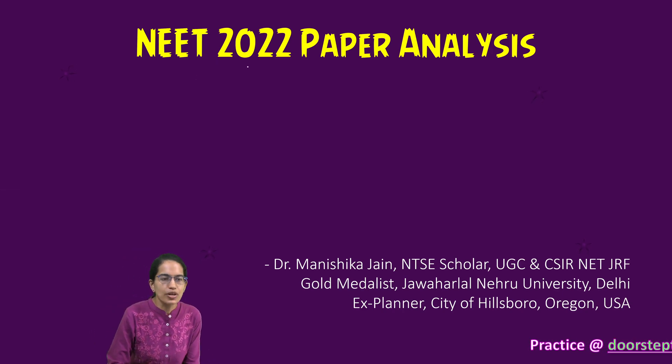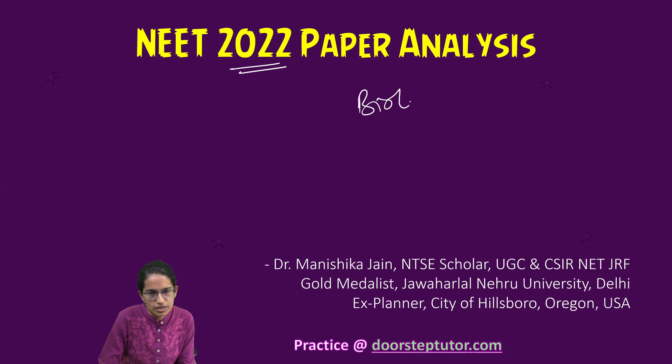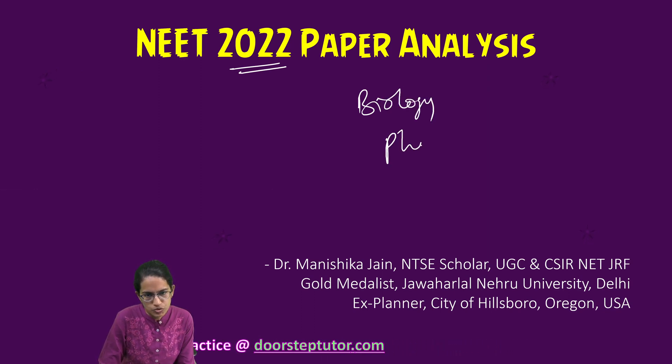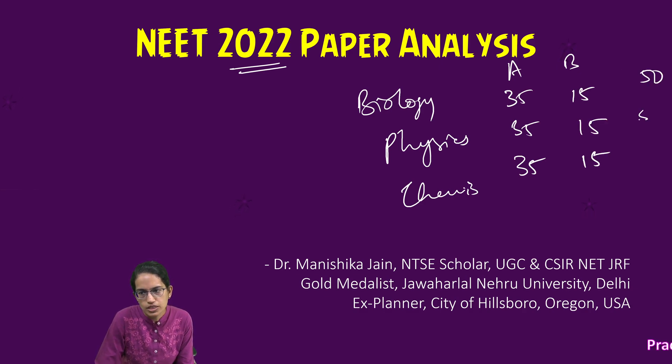A quick analysis for your NEET 2022 examination paper. The three heads of biology, physics, and chemistry each had 50 questions this time. There were 35 questions in all for section A and 15 questions in all in section B, totaling 50 questions in each set. Under biology, it was divided into two heads: botany and zoology.